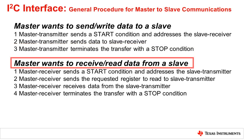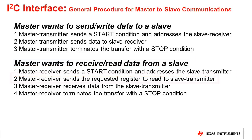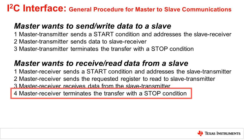Here are the steps when a master wants to receive or read data from a slave. One, master receiver sends a start condition and addresses the slave transmitter. Two, master receiver sends a request register to read the slave transmitter. Three, master receiver receives the data from the slave transmitter. And four, master receiver terminates the transfer with a stop condition.